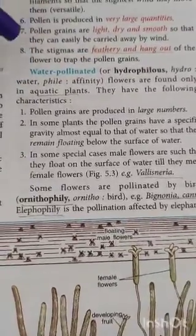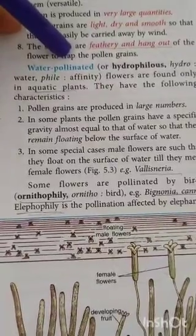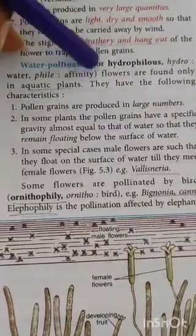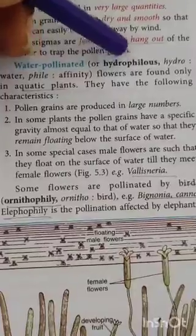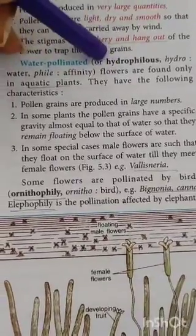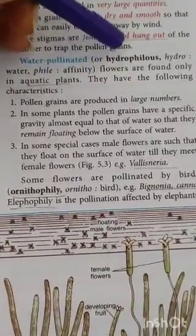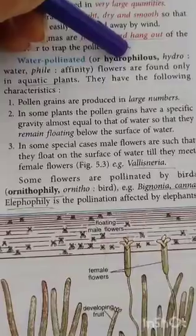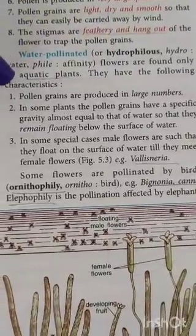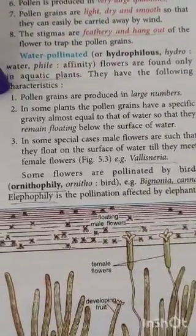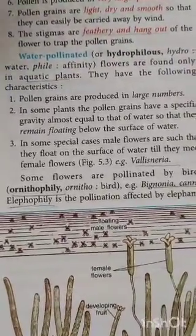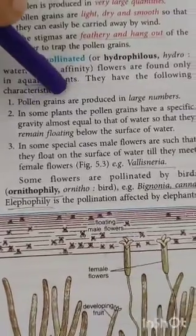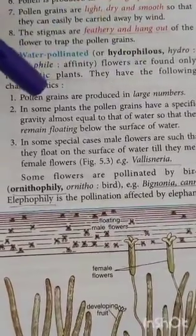Second, we have water pollinated flowers, also called hydrophilous flowers, and the process is known as hydrophily. When pollens are transferred with the help of water from the anther to the stigma, that is known as hydrophily. A feature of such flowers is that pollen grains are produced in large numbers, same as in wind-pollinated flowers.